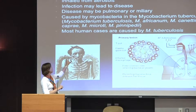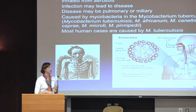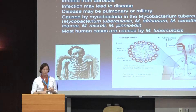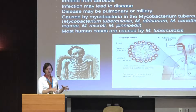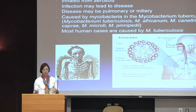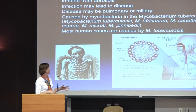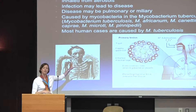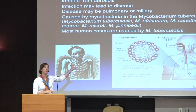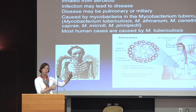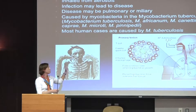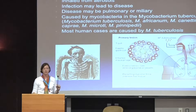The MTB complex includes Mycobacterium tuberculosis, Mycobacterium africanum, M. bovis, M. capra, M. microti, et cetera. It turns out that humans can be infected by all of these, and the symptoms shown constitute the disease tuberculosis — it's treated in the same way. Most humans tend to be infected by the classical M. tuberculosis.